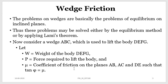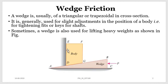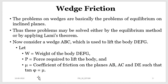The block is named DEFG. W is the weight of the block which is to be lifted, and P is the force required to lift the body, applied on one face of the wedge. Mu is the coefficient of friction on planes AB, AC, and DE, such that tan(phi) equals mu. There will be points of contact between the two surfaces at ED, AB, and AC, and mu is the coefficient of friction between all these faces, where phi is the angle of friction.